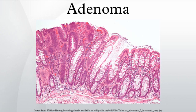Some adenomas grow from epithelial tissue in non-glandular areas but express glandular tissue structure. Although adenomas are benign, over time they may transform to become malignant, at which point they are called adenocarcinomas. Even while benign, they have the potential to cause serious health complications by compressing other structures and by producing large amounts of hormones in an unregulated, non-feedback-dependent manner.